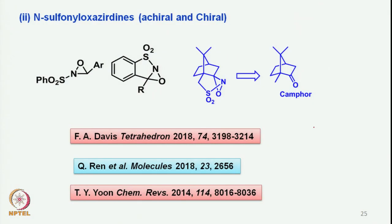Now we will go further and see how we can make use of this in a chiral fashion. N-sulfonyl oxazoridines, as I discussed last time, are more popular than other oxazoridines. One of the most useful oxazoridines is the type where you have an aromatic ring on the carbon of the oxazoridine and an N-sulfonyl group present on the nitrogen.